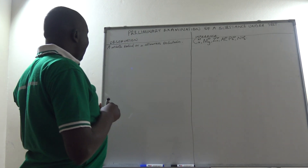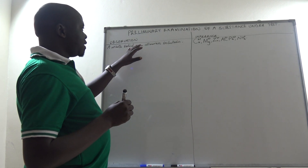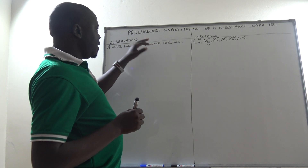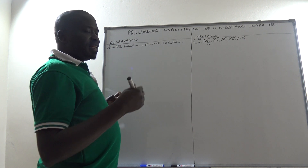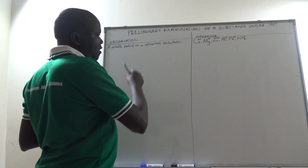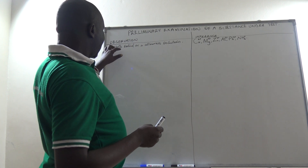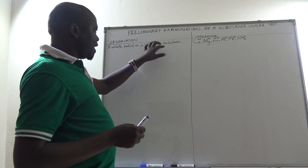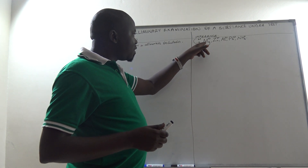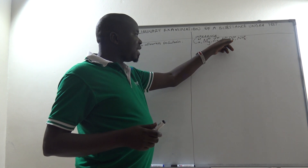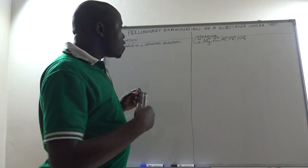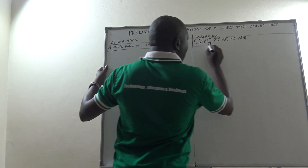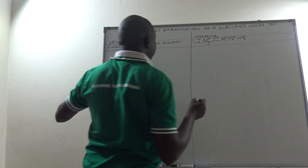If a substance is a white solid, or its solution — which you have prepared by dissolving in water, or in an acid if it is insoluble in water — if that substance is a white solid or the solution is colorless, then you have to think of any one of these ions as possibly present in the substance under test.